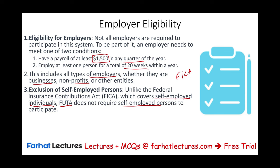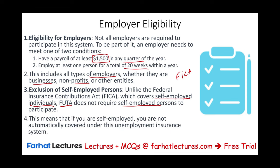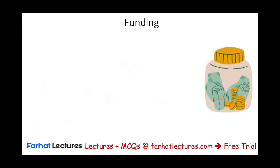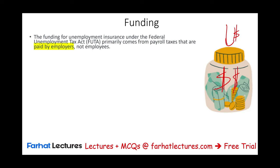If you have employees and you qualify — if you have the payroll of $1,500 or employ at least one person for a total of 20 weeks — then you have to pay for them. This means if you're self-employed, you are not automatically covered under this unemployment insurance system. Who funds this program? The funding of unemployment insurance under FUTA primarily comes from the payroll taxes paid by employers — companies, not employees.